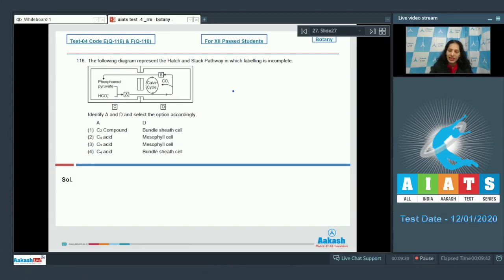This cell is the mesophyll cell and the Calvin cycle operates in the bundle sheath cell. No doubt that this D is a bundle sheath cell. Option number 2 and 3 are ruled out because D can be bundle sheath cell only. Now A can be a C2 compound or a C4 acid.